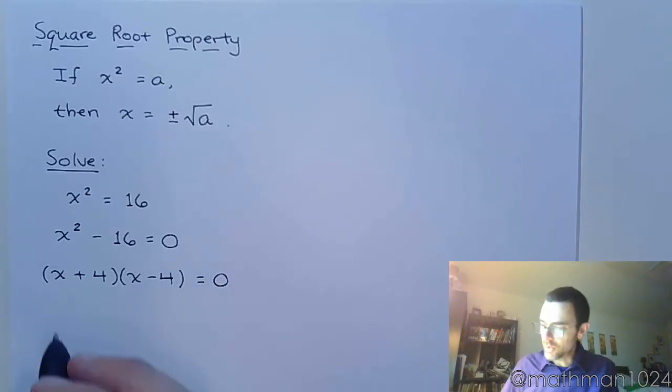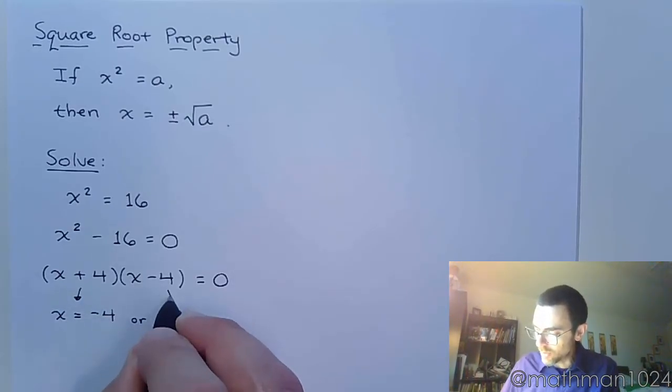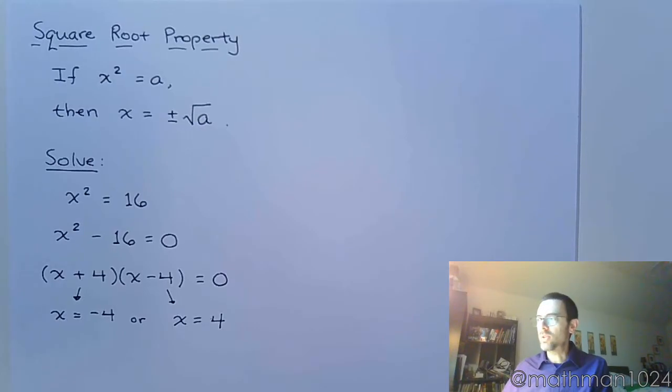And using the zero-factor theorem, we find that x is equal to negative 4, or from the other factor, x is equal to positive 4. So we expected two answers and we get two answers. So that's good, right?